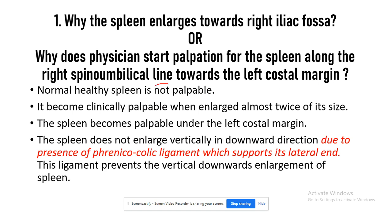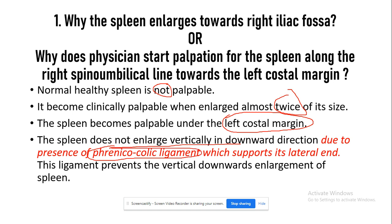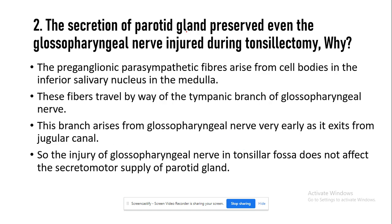Keep in mind that the spleen is generally not palpable, but once it becomes palpable it is already twice its normal size, and it becomes palpable under the left costal margin. The spleen never enlarges vertically downward because it is supported on its lateral side by the phrenocolic ligament, which prevents vertical downward enlargement — that's why it always enlarges towards the right iliac fossa.